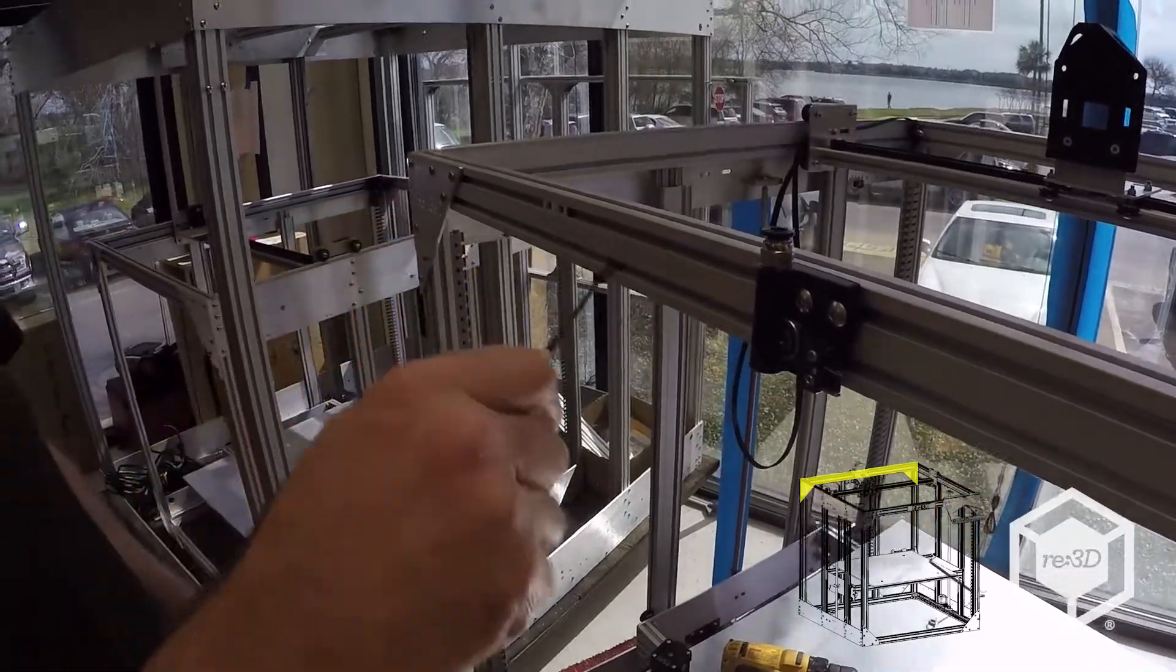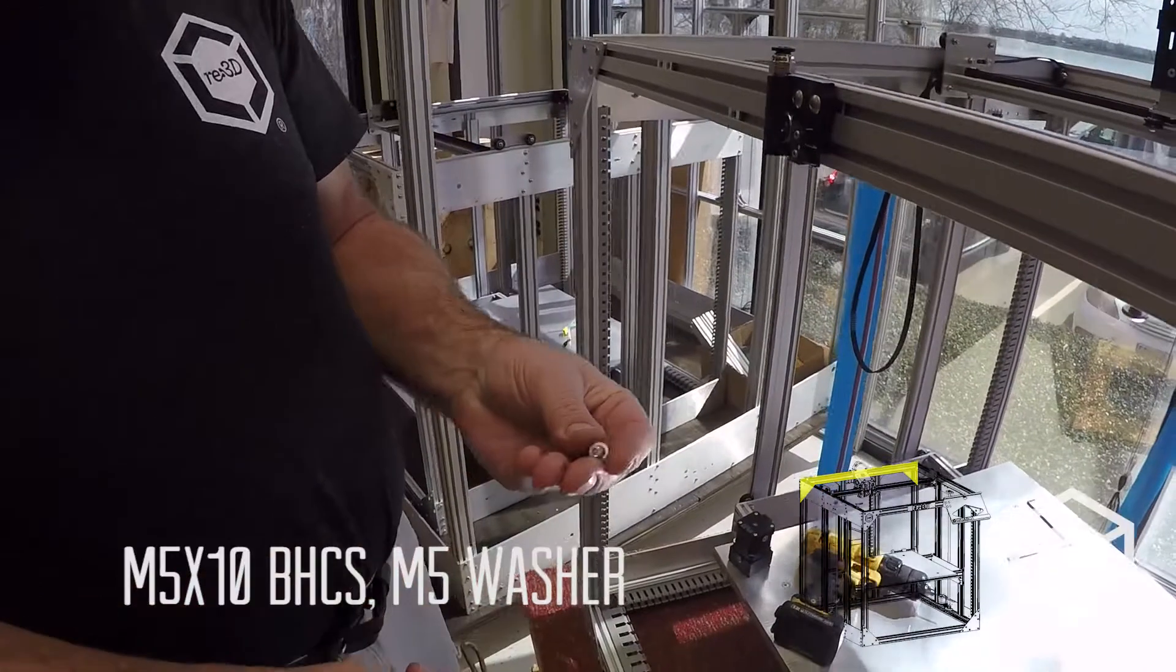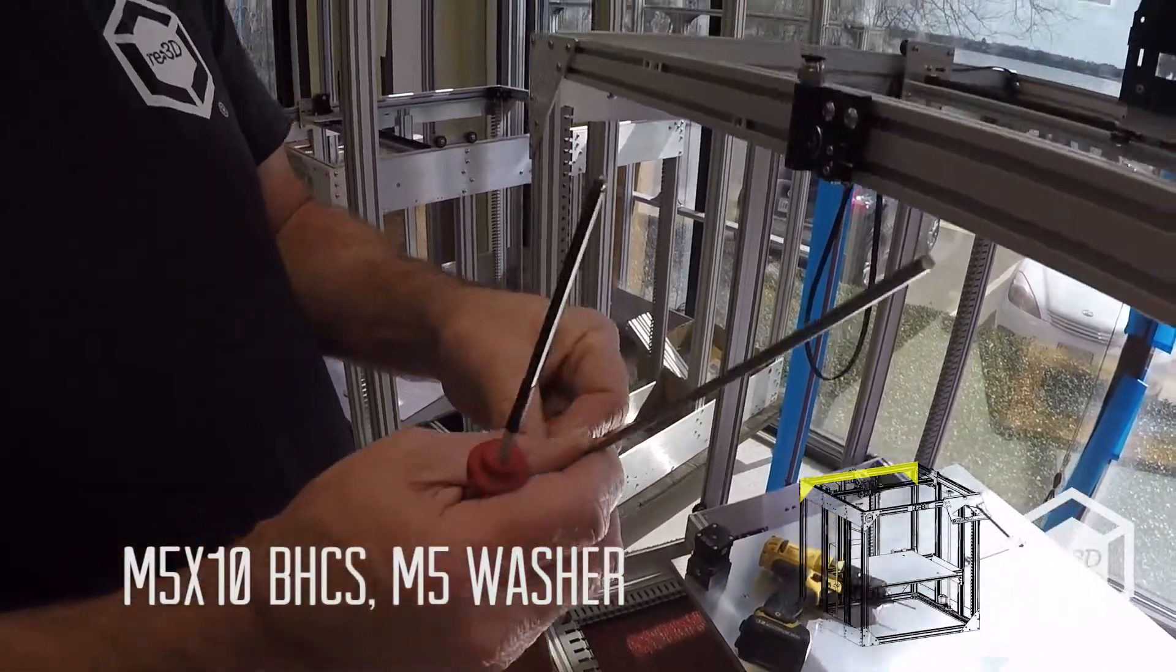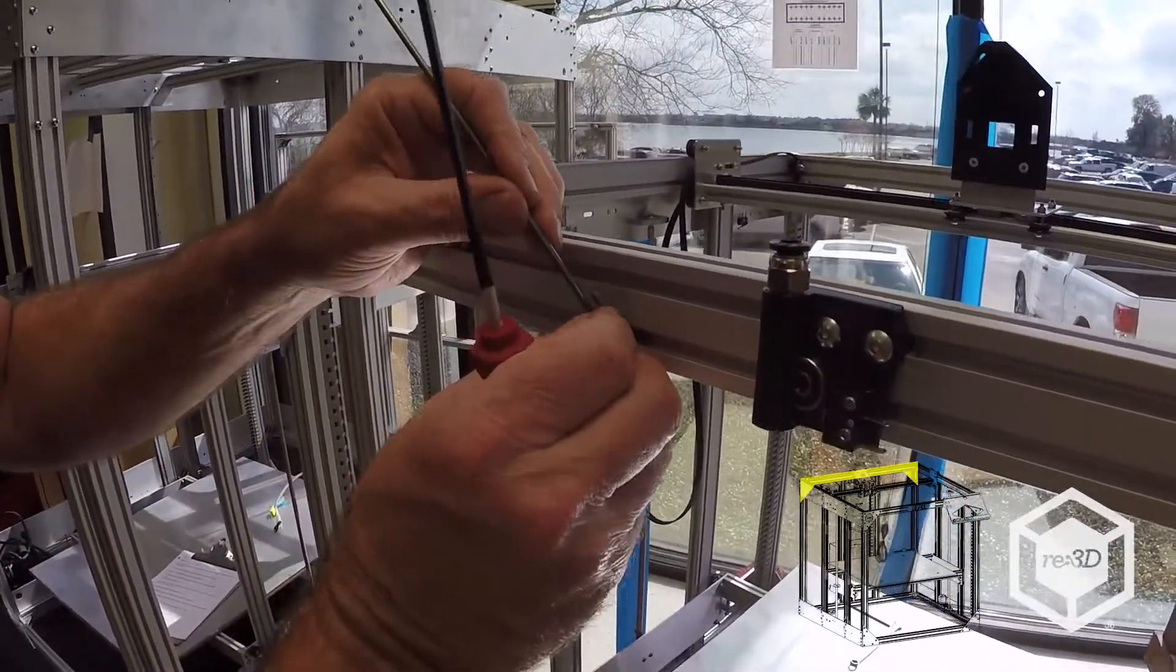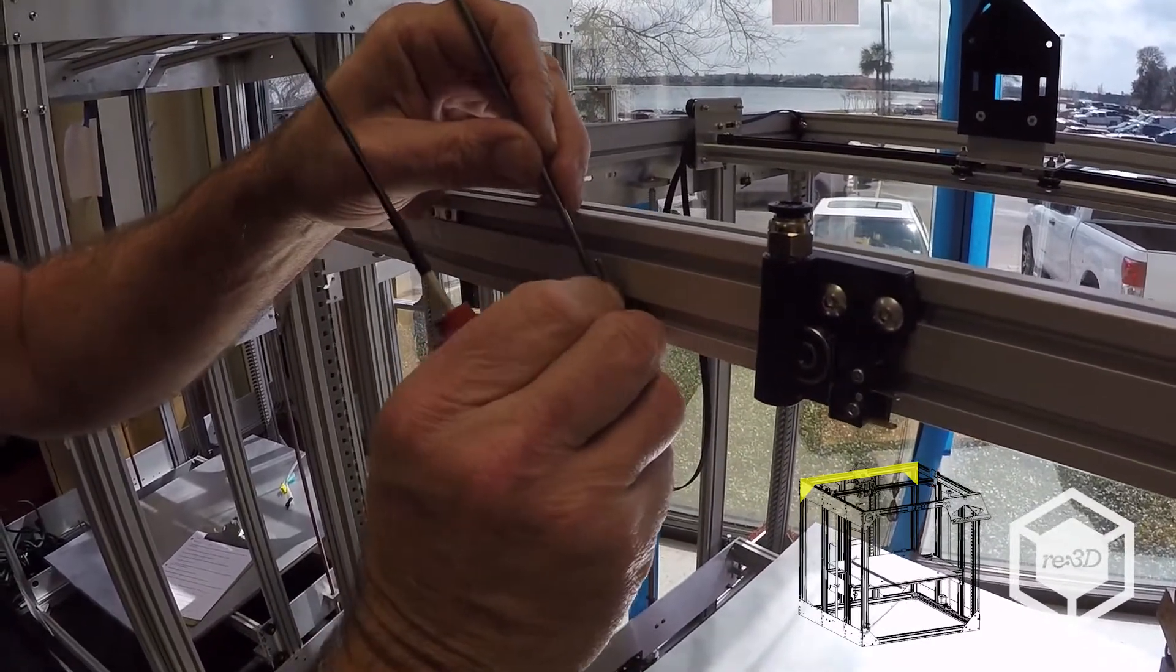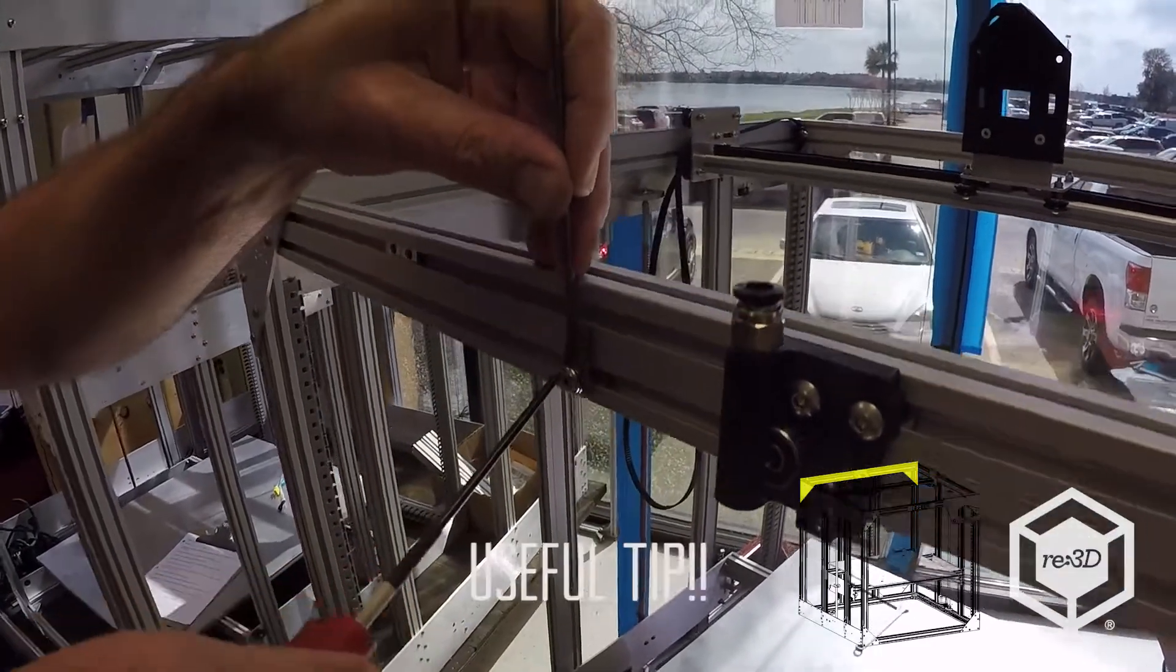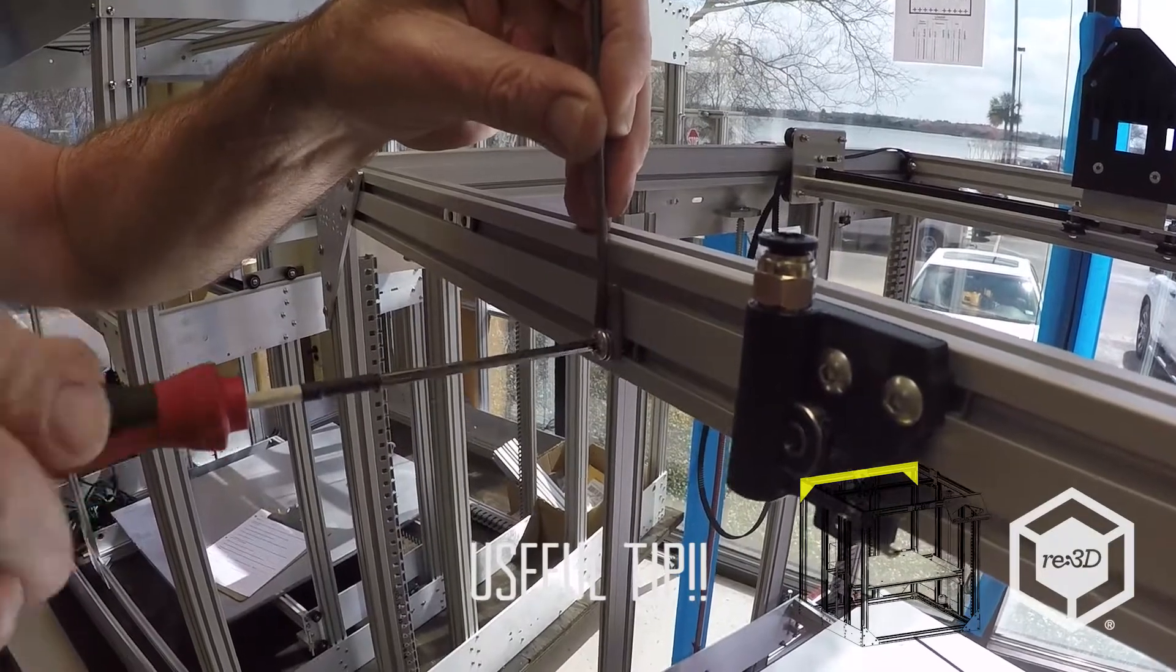You also have the filament tube holder. Use an M5x10 with a washer. You're just going to put this in the approximate center line of the bot. Just pull it up so it captures, gets captured with the washer.